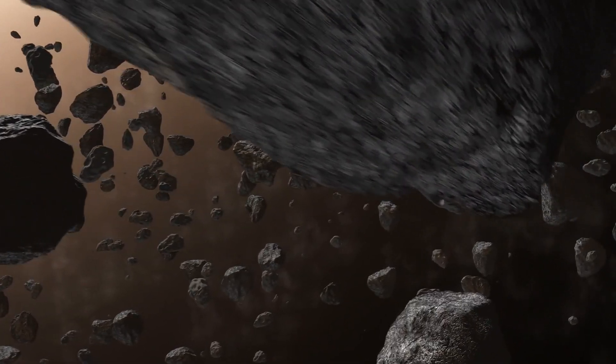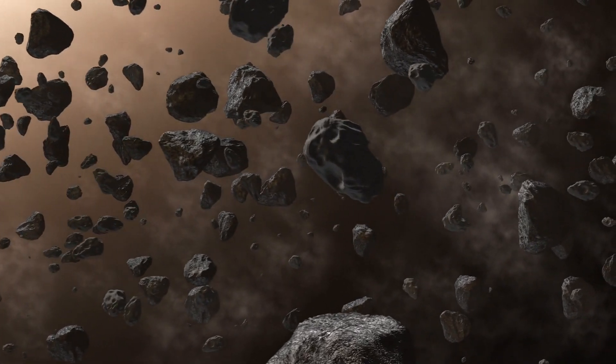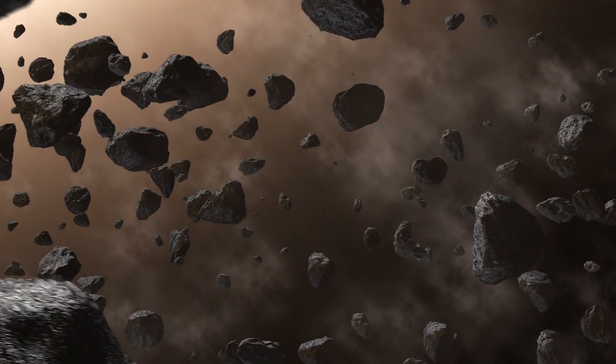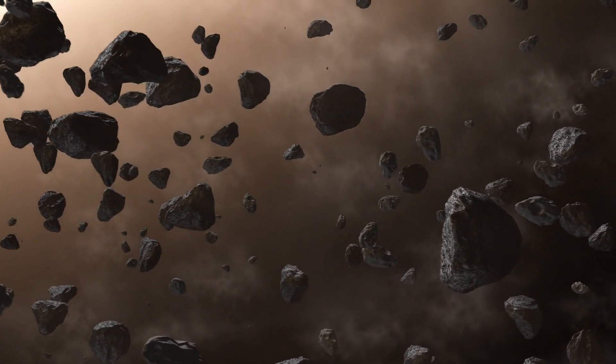Planets are like space wanderers that orbit stars. Earth is one of these planets, and it's just the right distance from the sun to have liquid water and all the things needed for life.